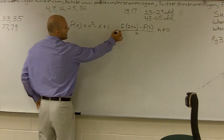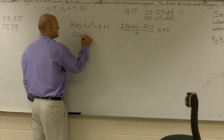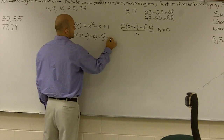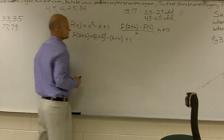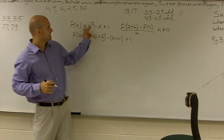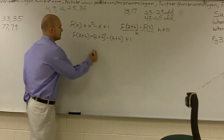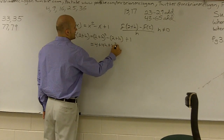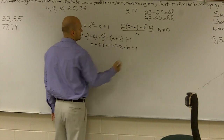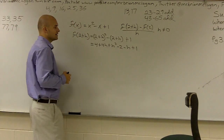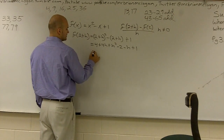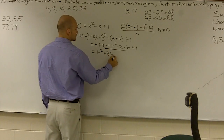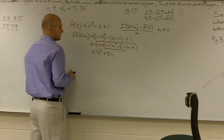So we have to evaluate this function twice. For f of 2 plus h, I'm going to substitute 2 plus h in for x, giving us 2 plus h, squared, minus 2 plus h, plus 1. When I expand this, I get 4 plus 4h plus h squared minus 2 minus h plus 1. Then I can combine my like terms and I get h squared plus 3h plus 3.